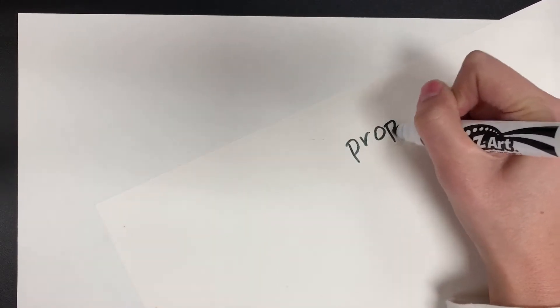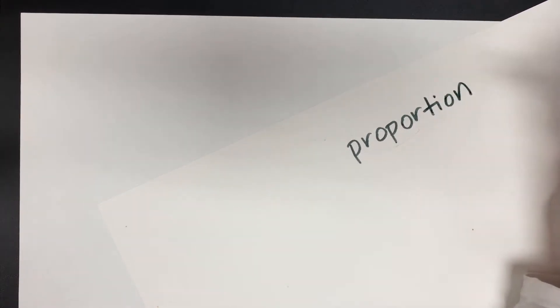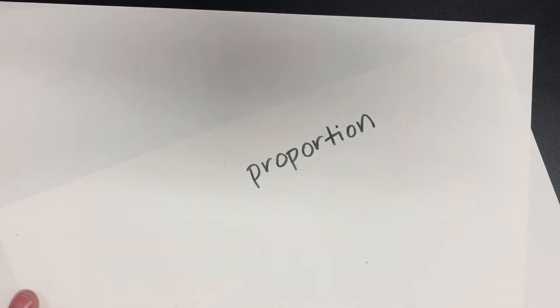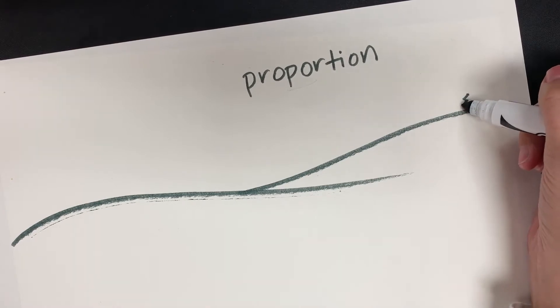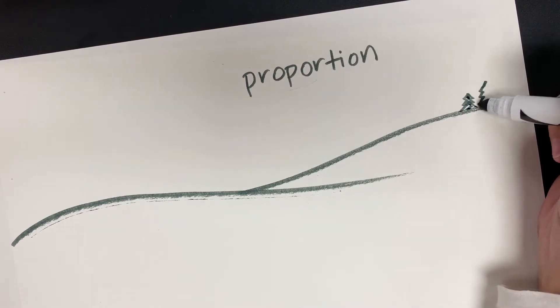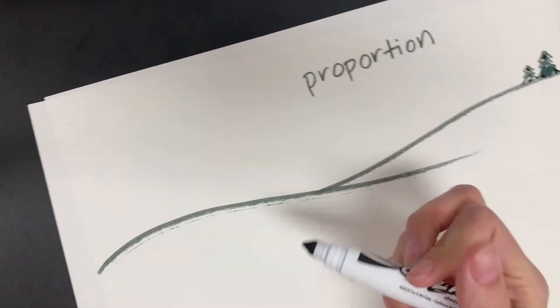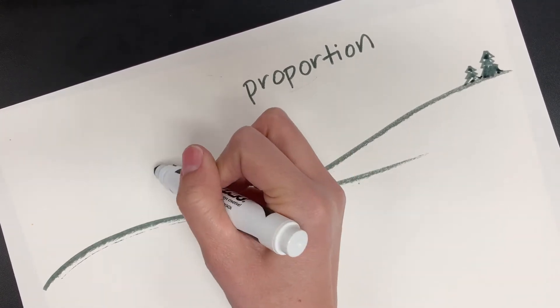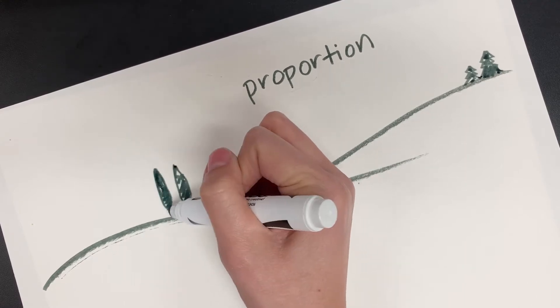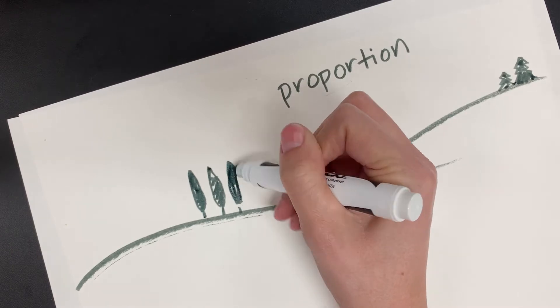We are going to be learning vocabulary such as proportion. Proportion has to do with the size of something. If we have a tree way off in the distance, let's say that this is a field, we have some fields, and then off in the distance, very far away from us, are some trees. Maybe there's a couple that look a little bit like Christmas trees, and then there might be some that have some of those really tall trees. But the point is, they are very small, they're away from us, and they're pretty far away from us.